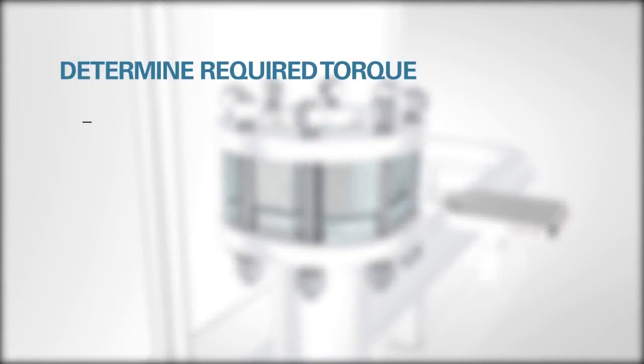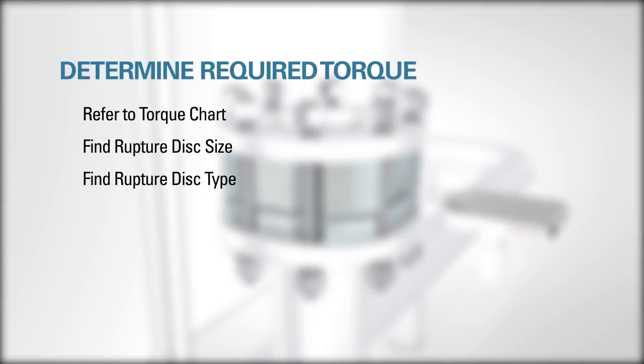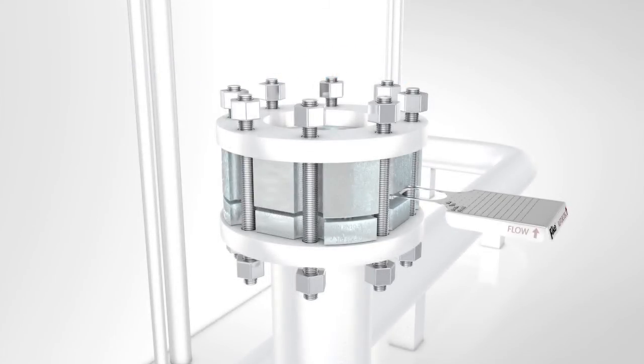To determine the required torque, refer to the appropriate stud torque chart included in the written installation instructions. Find the nominal rupture disc size and ANSI rating of your flange. Follow the row across the column that contains your rupture disc type to determine what is required in foot-pounds.